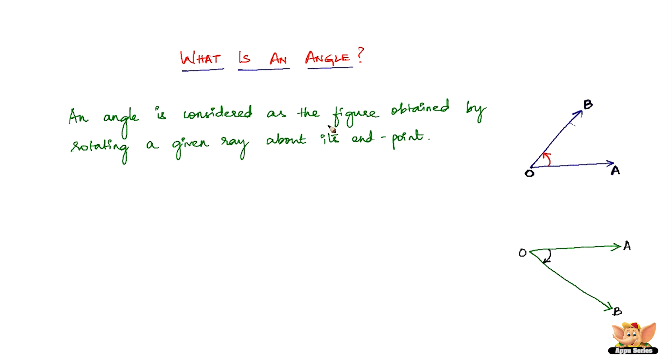An angle is considered as a figure obtained by rotating a given ray about its endpoint. O is the vertex here. Now that we've explored what is an angle...